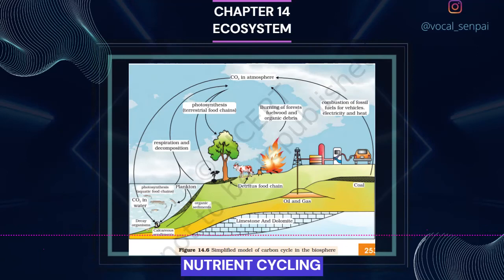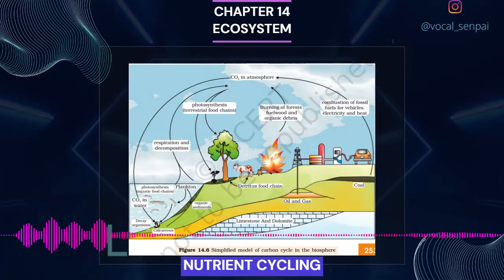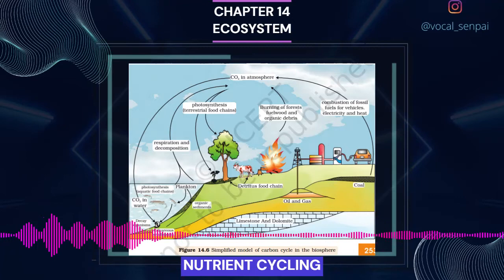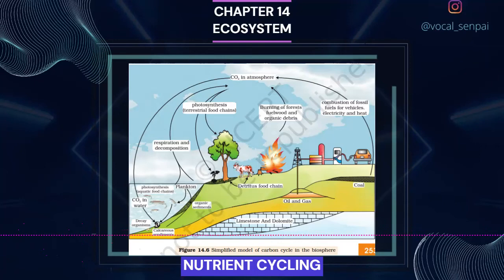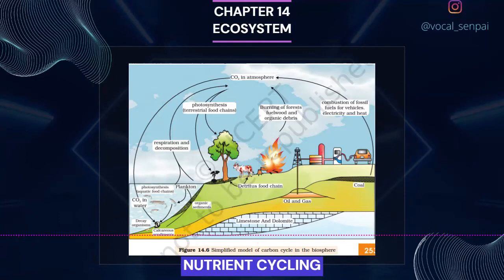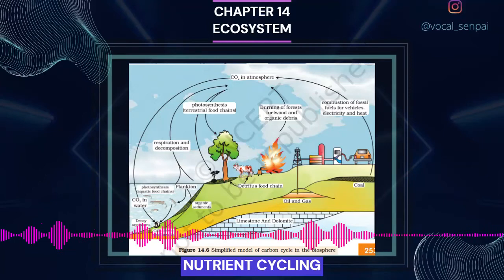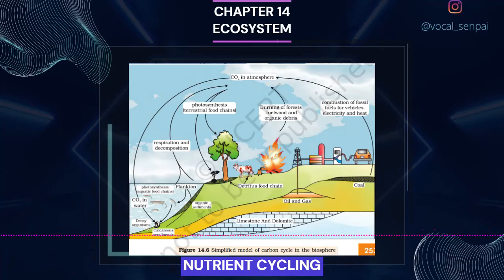The movement of nutrient elements through the various components of an ecosystem is called nutrient cycling. Another name of nutrient cycling is biogeochemical cycles (bio — living organism, geo — rocks, air, water). Nutrient cycles are of two types: A) gaseous and B) sedimentary. The reservoir for gaseous type of nutrient cycle, for example nitrogen and carbon cycle, exists in the atmosphere, and for the sedimentary cycle, for example sulfur and phosphorus cycle, the reservoir is located in earth's crust.